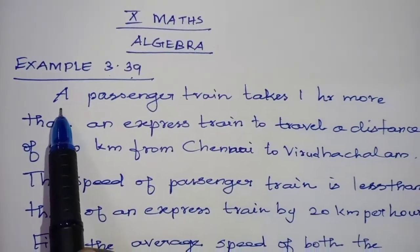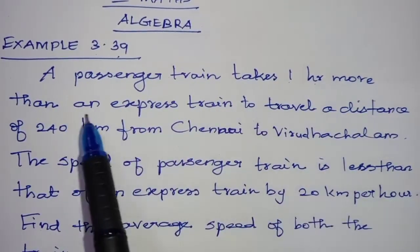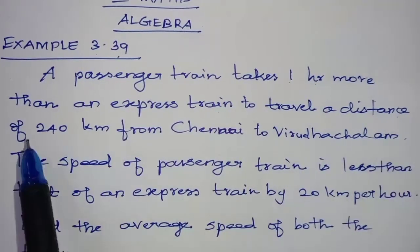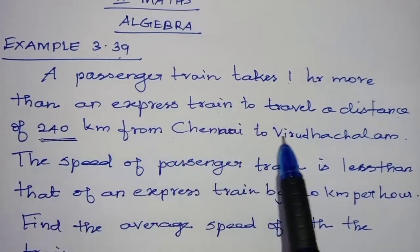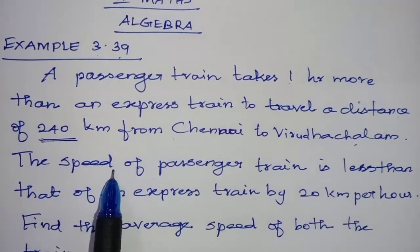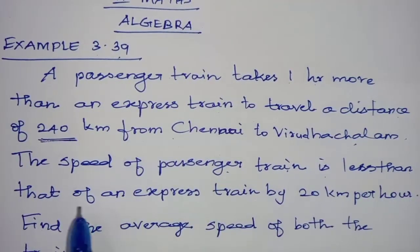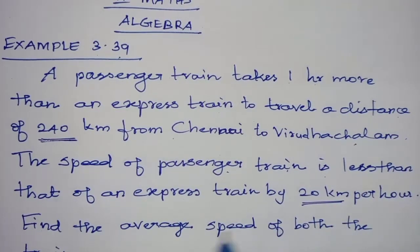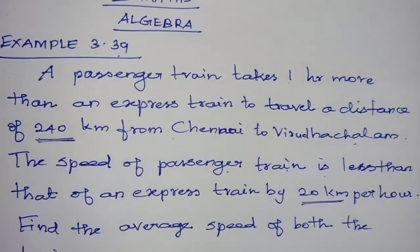I will read the question. A passenger train takes one hour more than an express train to travel a distance of 240 km from Chennai to Vriddhachalam. The speed of the passenger train is less than that of an express train by 20 km per hour. Find the average speed of both the trains.